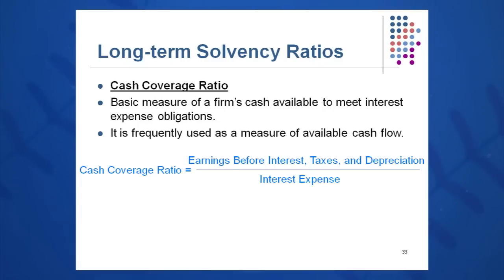Here's another coverage ratio: cash coverage, which is EBIT plus depreciation divided by interest expense. I add back depreciation because, as we learned in session two, depreciation is a non-cash expense — no cash is actually deducted when we record that expense on the income statement. These coverage ratios are not used as heavily as the first three long-term solvency ratios or the long-term debt-to-equity ratio. For memorization, focus on long-term debt to equity plus one of the first three, like total debt to equity.